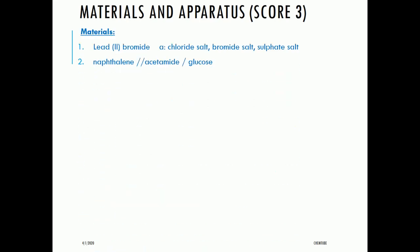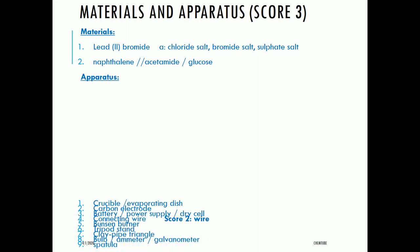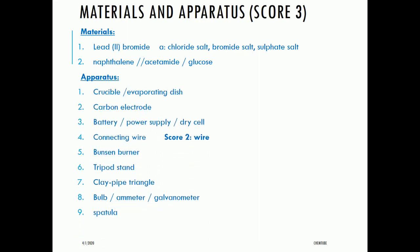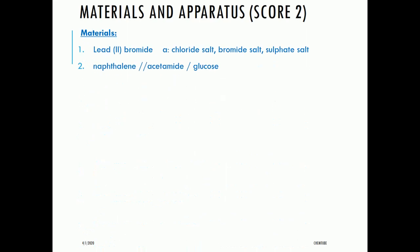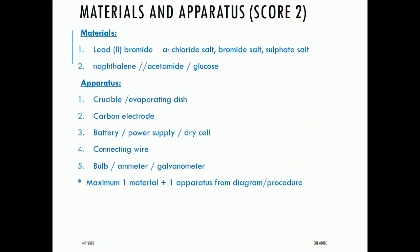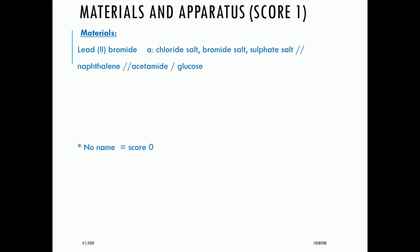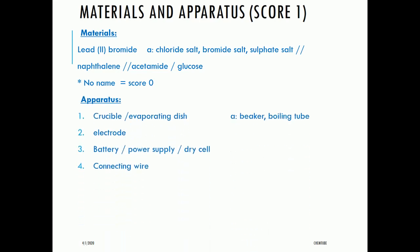Materials include: lead bromide, acid chloride, salt bromide, salt and sulfate salts for ionic compounds; naphthalene, acetamide, or glucose for covalent compounds. Apparatus needed (nine items): crucible or evaporating dish, carbon electrodes, battery or power supply or dry cell, connecting wire (if student writes only 'wire' — score 2 directly), Bunsen burner, tripod stand, pipe clay triangle, bulb, ammeter or galvanometer, and spatula. The student may get maximum one material and one apparatus from the diagram. Score 2 requires two materials and five apparatus; score 1 requires one material and four apparatus.